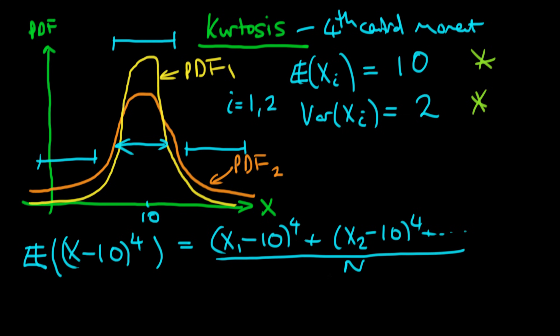And let's think about how it might differ between these two random variables. When you sort of have anything raised to the power of four, the sort of thing to realize is that as this sort of difference between X and the mean gets bigger, then when I raise that to the power of four, it gets bigger very very quickly.